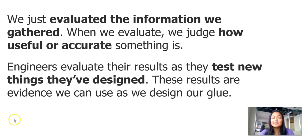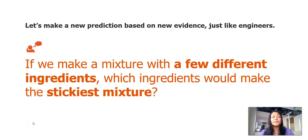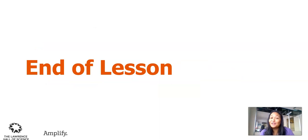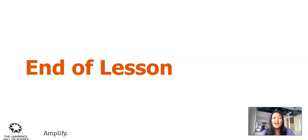I want you to think of a prediction based on the things that we found out, just like engineers. So if we make a mixture with a few different ingredients, which ingredient would make the stickiest mixture? I'm thinking about the four ingredients that we used. What if we use more than one in one mixture? What if we use more than two? I wonder which ingredient would be the stickiest. We learned a lot — from making predictions about our sticky test, to recording those predictions, to seeing the results of our sticky test, using an app to graph it, and finally evaluating our evidence using claims and evidence. I hope you had fun and I will see you next time.